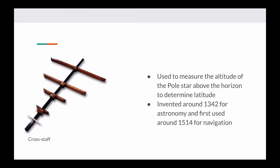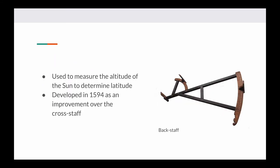The cross staff was used to measure the altitude of the pole star above the horizon to determine latitude. It was probably invented around the mid-1300s for astronomical purposes and then in the 1500s began being used for navigation. It was further improved into the back staff in the late 1500s. These were very important technologies, and many of the explorers from grade seven social studies had images of these tools in their profile pictures.